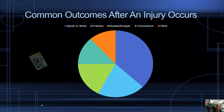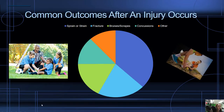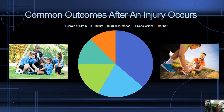This is a pie chart of the common outcomes after an injury. The big purple section is strains or sprains — it's very common and happens in basically every sport. Then we have fractures in blue, bruises and scrapes in green, concussions in teal, and other in orange.